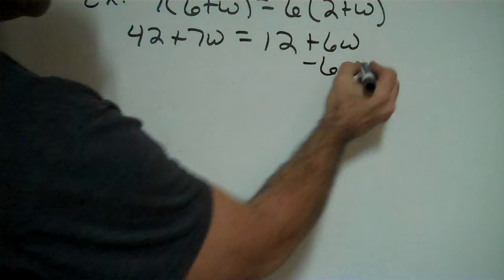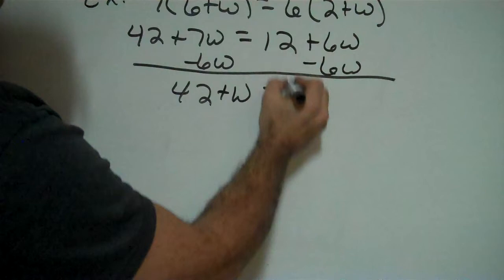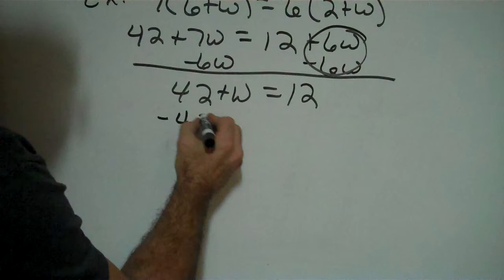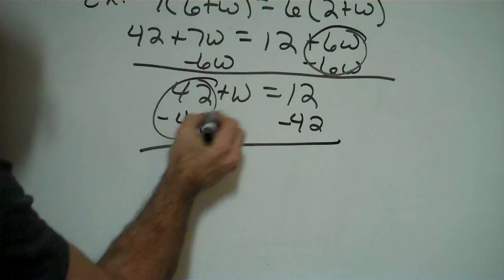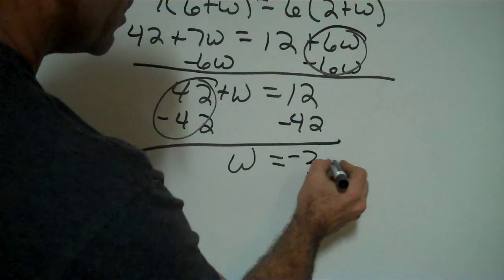Now let's move the smaller w first by adding a negative 6w to both sides. So that gives me 42. 7w minus 6w gives me just a 1w equal to the 12. And then that zeros out. So all I need to do to get that w by itself is to add a negative 42 to both sides. That zeros out. All that's left is that w equal to, I'm adding unlike signs, larger sign is negative. And then 42 minus 12 is 30. So my answer is a negative 30.